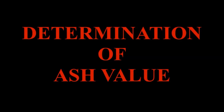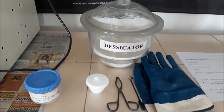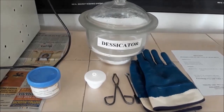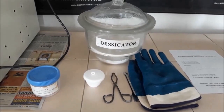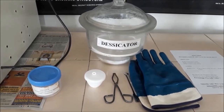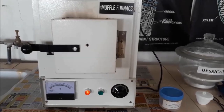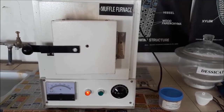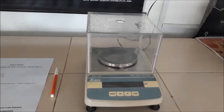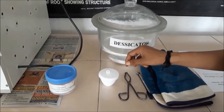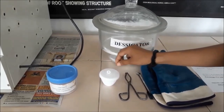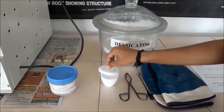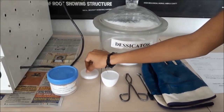Hello friends, today we will show you how to determine the ash value of the powdered crude drug. For this experiment we require: powdered crude drug, silica crucible, tongs, gloves, desiccator, muffle furnace, and digital balance.